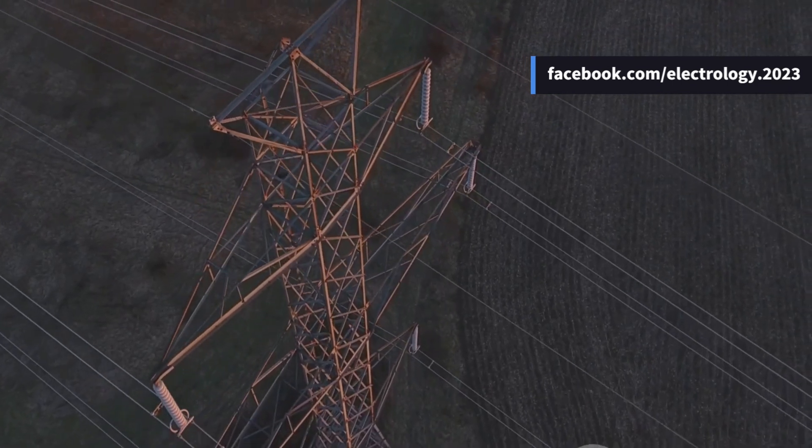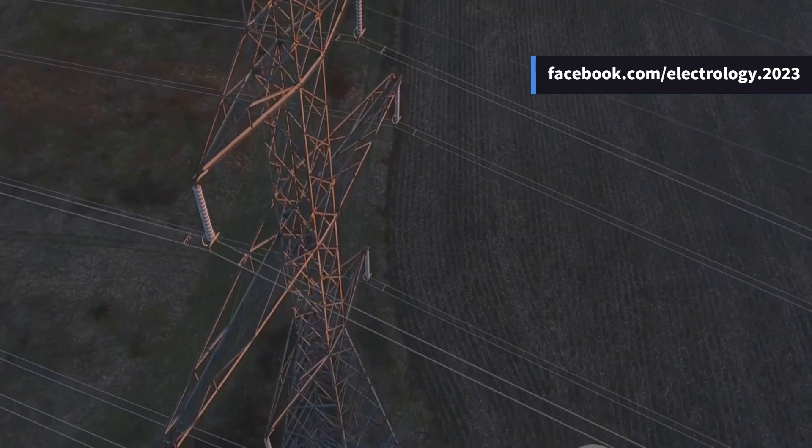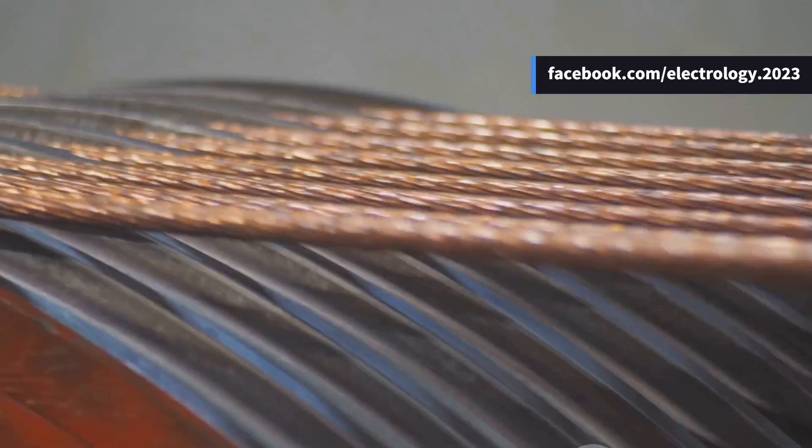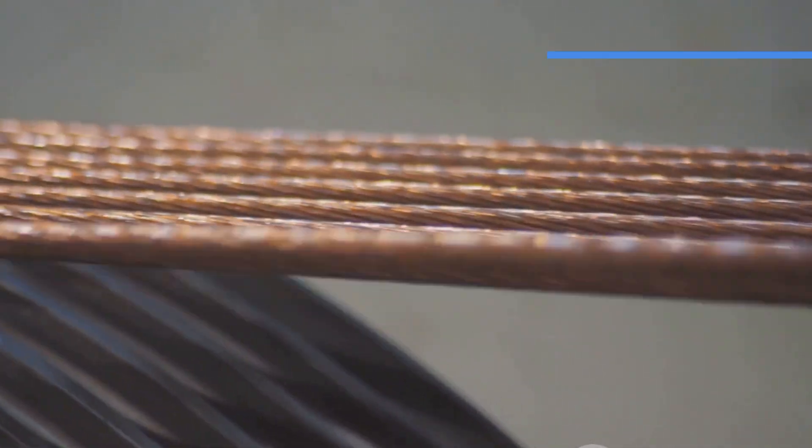Have you ever wondered, if increasing the conductor size reduces energy loss, why don't we just use the thickest possible wire in transmission lines? Well, here's the catch. Thicker wires mean more copper or aluminum, which also means a higher initial cost.